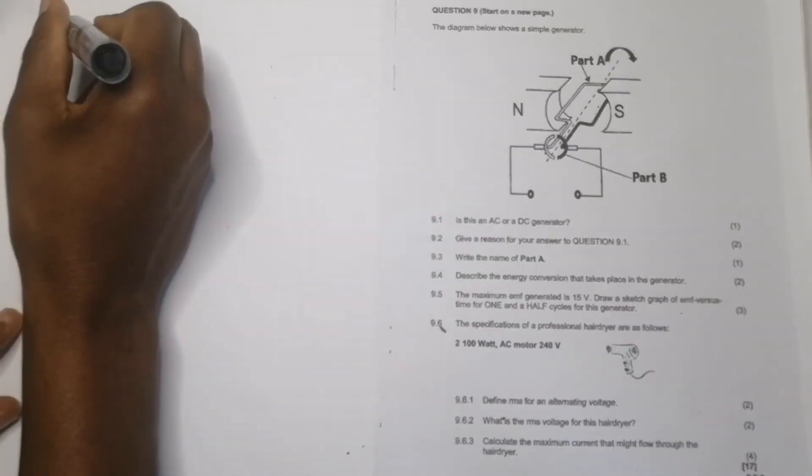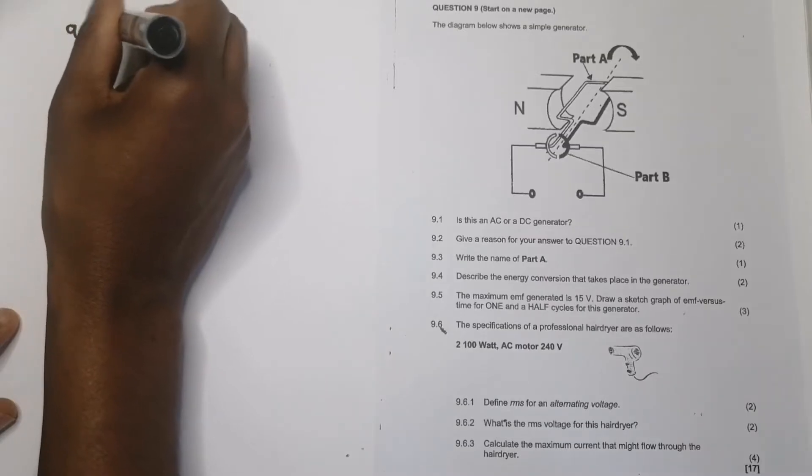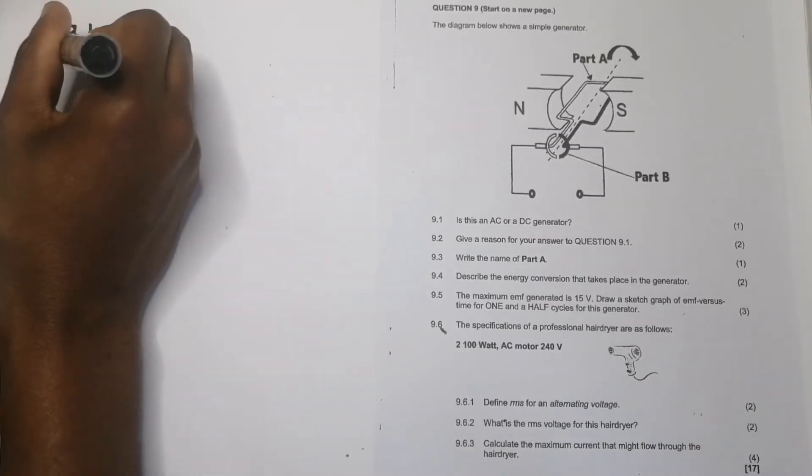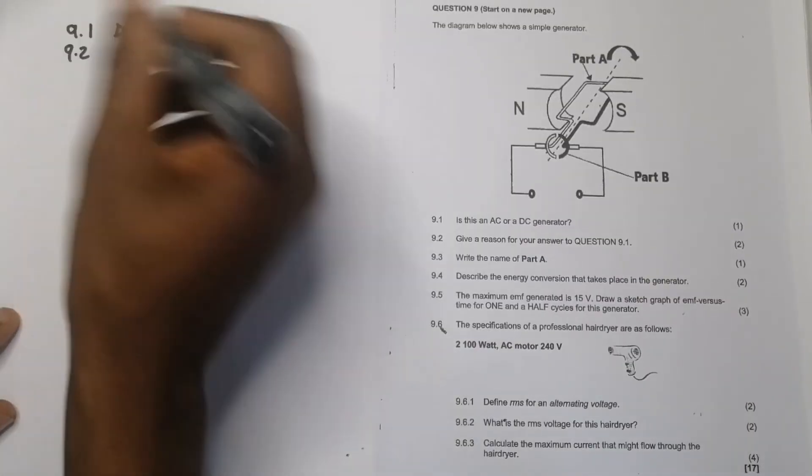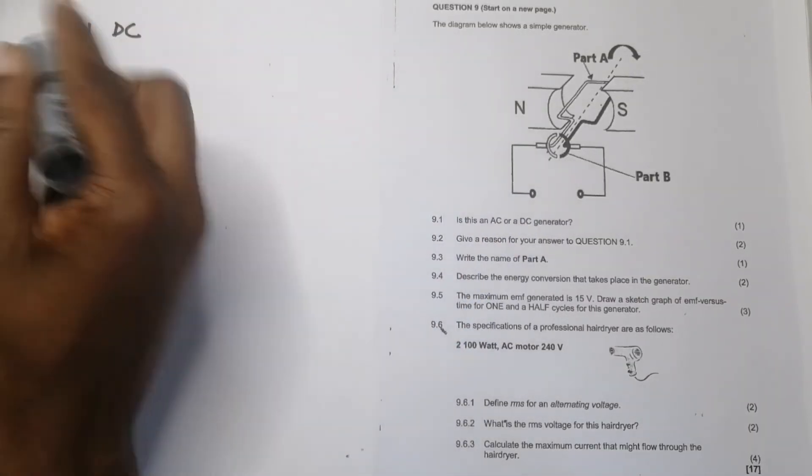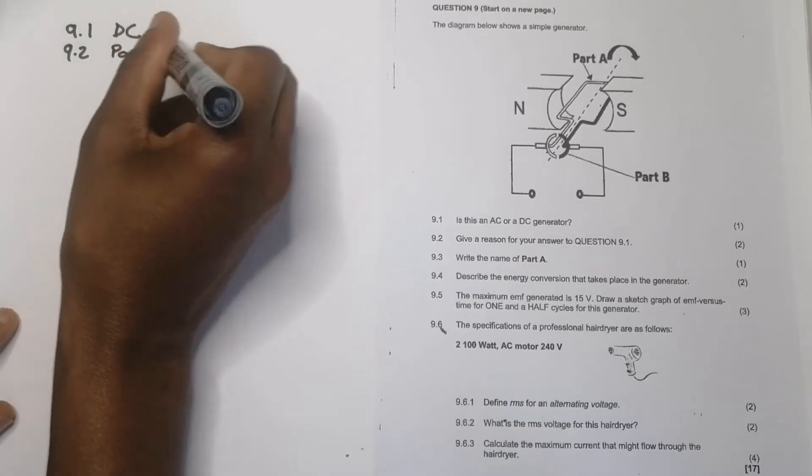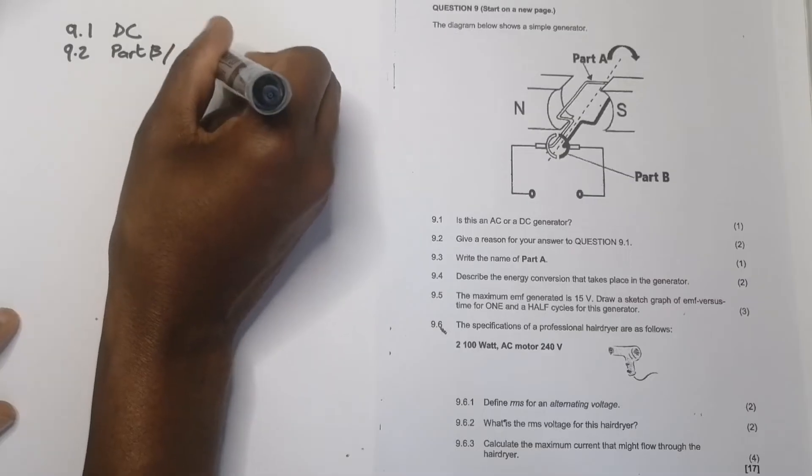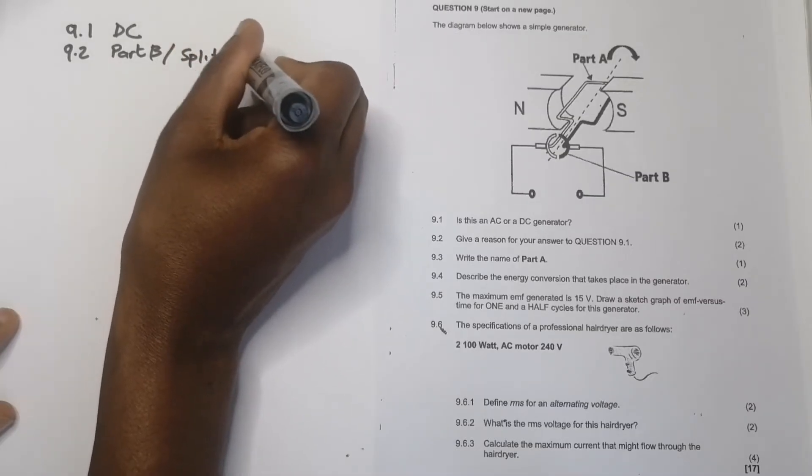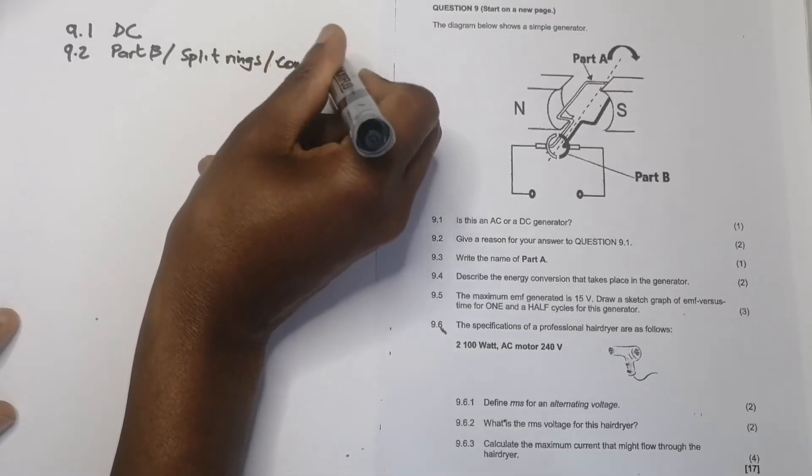So we know that 9.1, that should be a DC generator. And 9.2, they want a reason for that. You can say the reason is because of either you can say because of part B, or because there are split rings, or you can even say because of the presence of commutators.